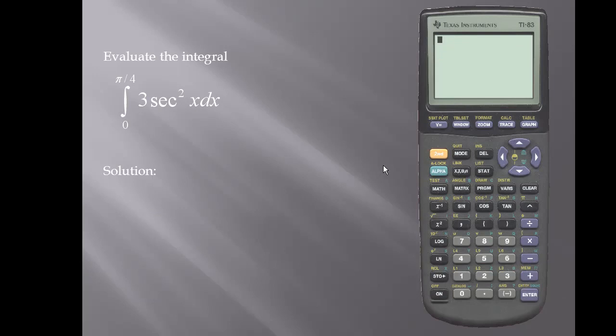Let's evaluate the integral from 0 to pi over 4 for the function 3 secant squared X DX.